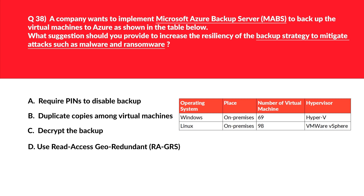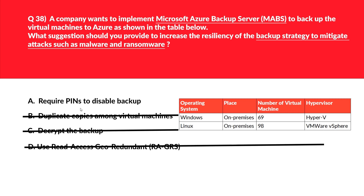Looking at the table in this question: there are only three ways to mitigate ransomware attacks for Microsoft Azure Backup Server (MABS) — using an additional layer of authentication, using email notifications as alerts, and recovering deleted backup data. Options B, C, and D don't belong to any of these categories, so they are incorrect. We are left with option A: require PINs to disable backup, since a PIN belongs to the category of additional layer of authentication, making it the correct answer.